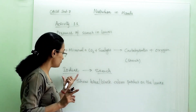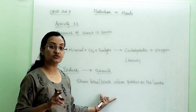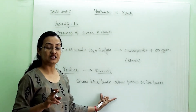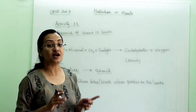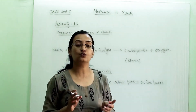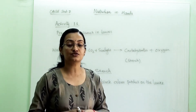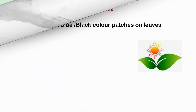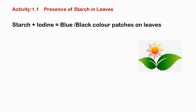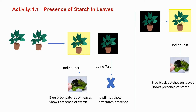With the help of iodine we are going to perform this activity. Let us understand through a diagram how we are checking the presence of starch in the leaves. We are using iodine, and as we have discussed, iodine is the indicator — it indicates the presence of a substance.